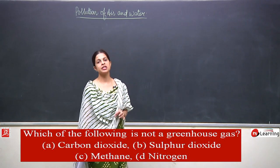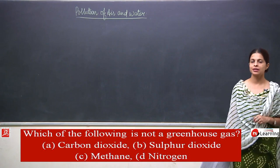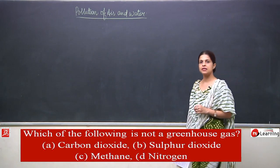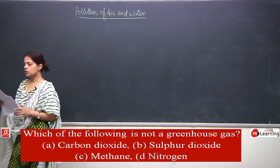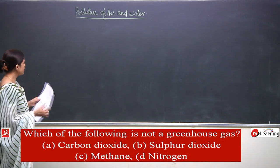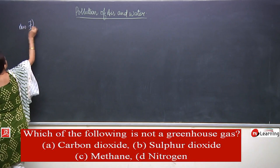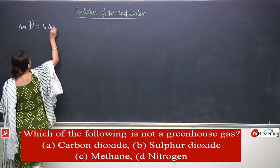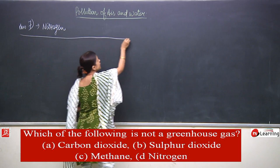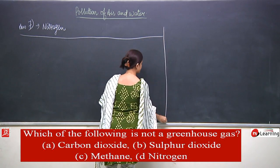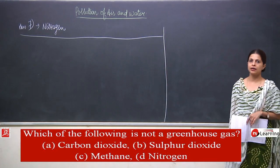What is left is nitrogen. Just now we discussed that nitrogen is part of the natural composition of air — 78% nitrogen is present in the atmosphere — so it cannot be the reason for the greenhouse effect. The answer to question 7 is nitrogen; it is not a greenhouse gas and is present at 78% in our atmosphere.